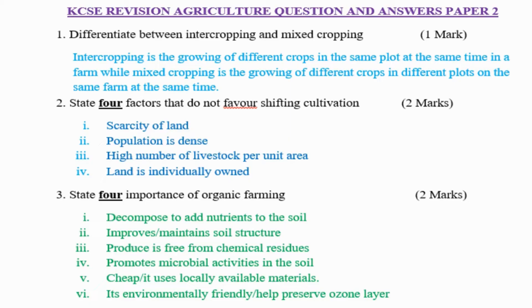Question number 3: State 4 importances of organic farming. Number 1: it decomposes to return nutrients to the soil. Number 2: it improves or maintains soil structure. Number 3: produce are free from chemical residues. It also promotes microbial activities in the soil, it is cheap as it uses locally available materials. Number 4: it is environmentally friendly — it helps to preserve the ozone layer.